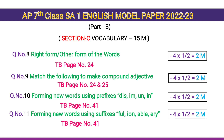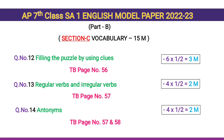Textbook page number 24, 25. Question number 10 — forming new words using prefixes like dis-, im-, un-, in- — 4 questions, 4 × ½ = 2 marks. Textbook page number 41. Question number 11 — forming new words using suffixes: -ful, -ion, -able, -ery — 4 questions, 4 × ½ = 2 marks. Textbook page number 41. Question number 12 — filling the puzzle using a cloze — 6 words, 6 × ½ = 3 marks. Textbook page number 56.